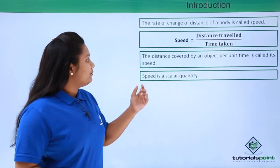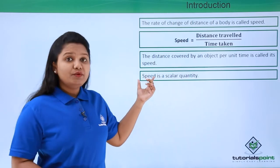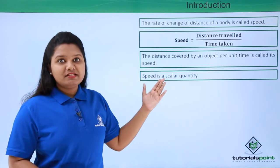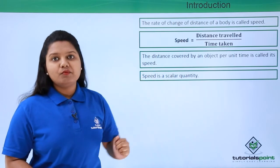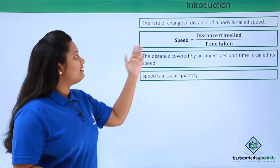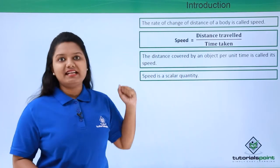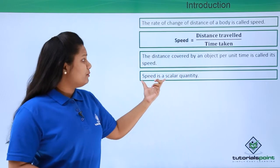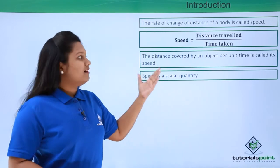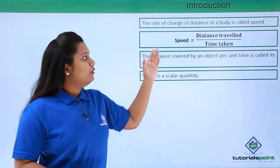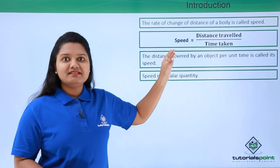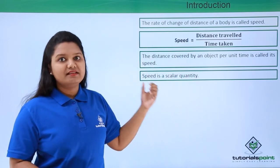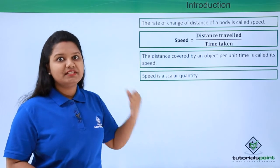Now, speed is a scalar quantity because it depends upon two scalar quantities, that is distance and time taken. Whenever we talk about speed, we are concerned about how much distance a body has traveled in a certain period of time.